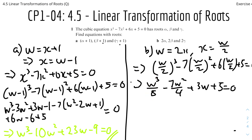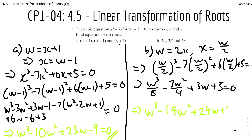By multiplying everything by 8, you get the final equation: w cubed minus 14w squared — because 8 times (7w squared over 4) is 2 times 7, which is 14 — plus 24w plus 40 equals 0. And that's the answer.